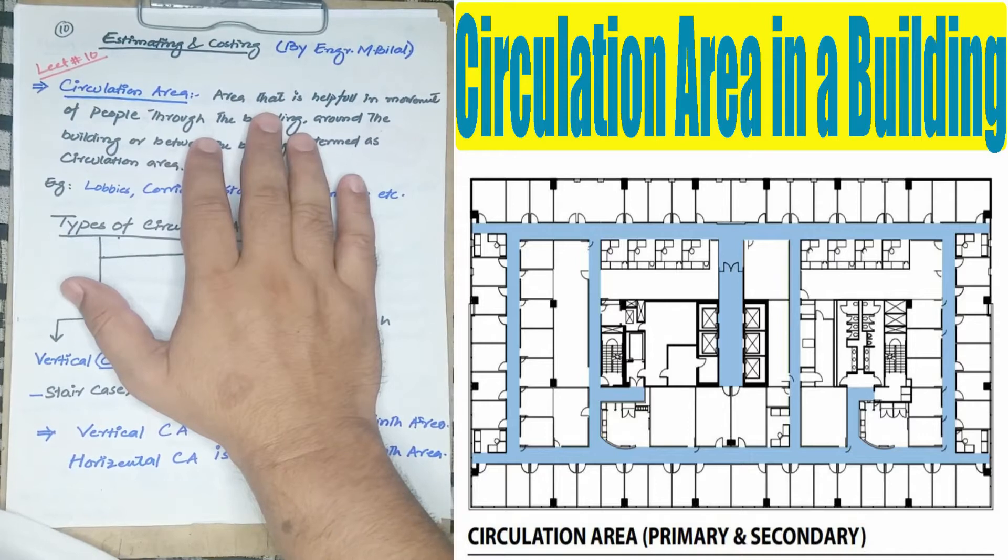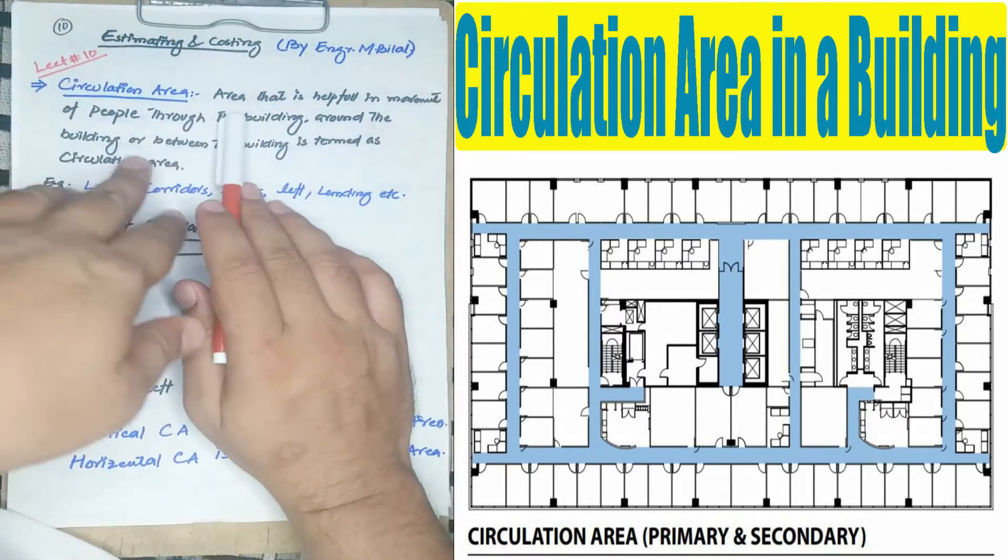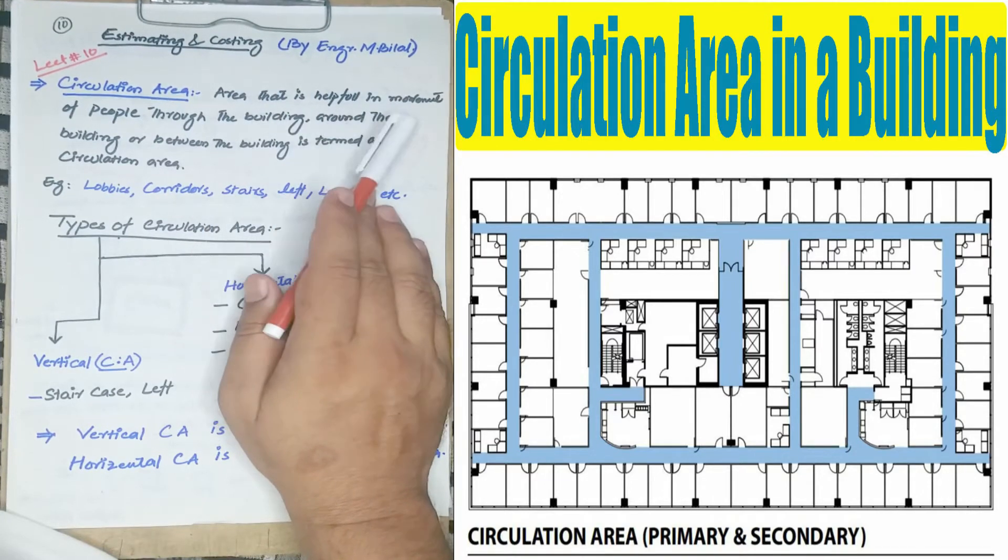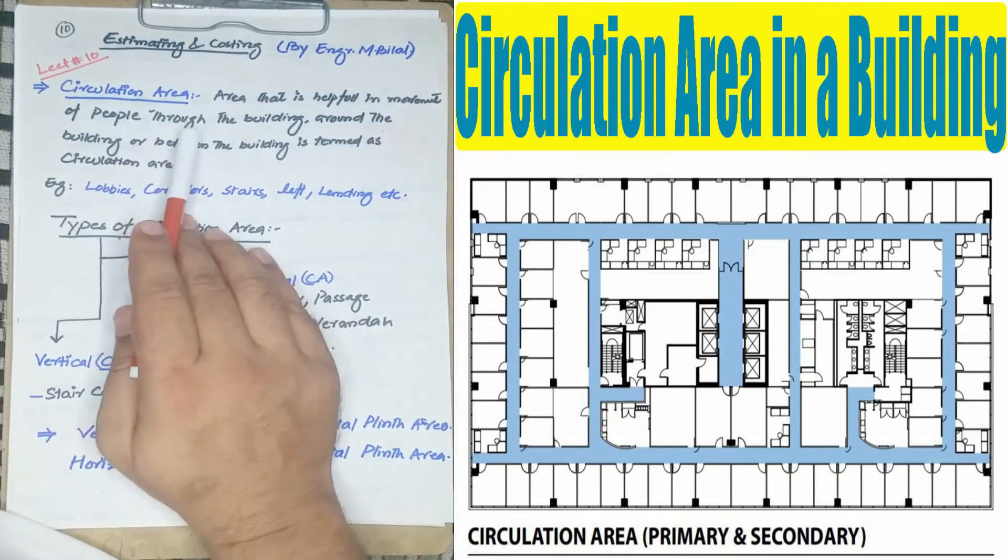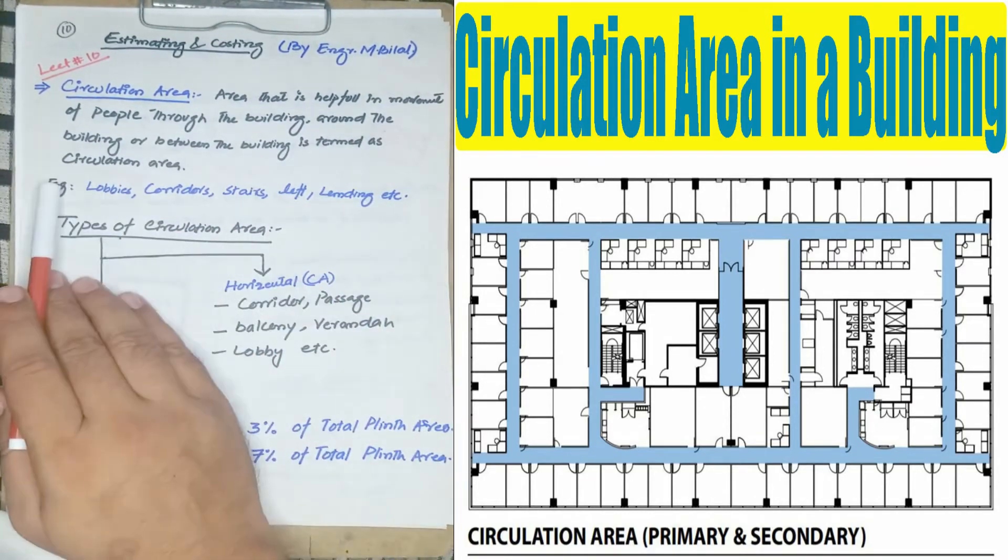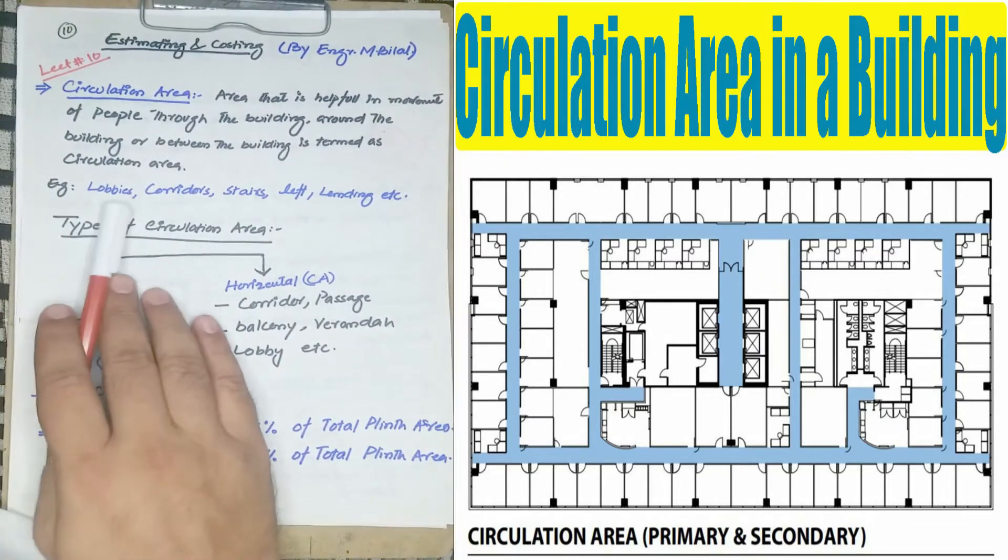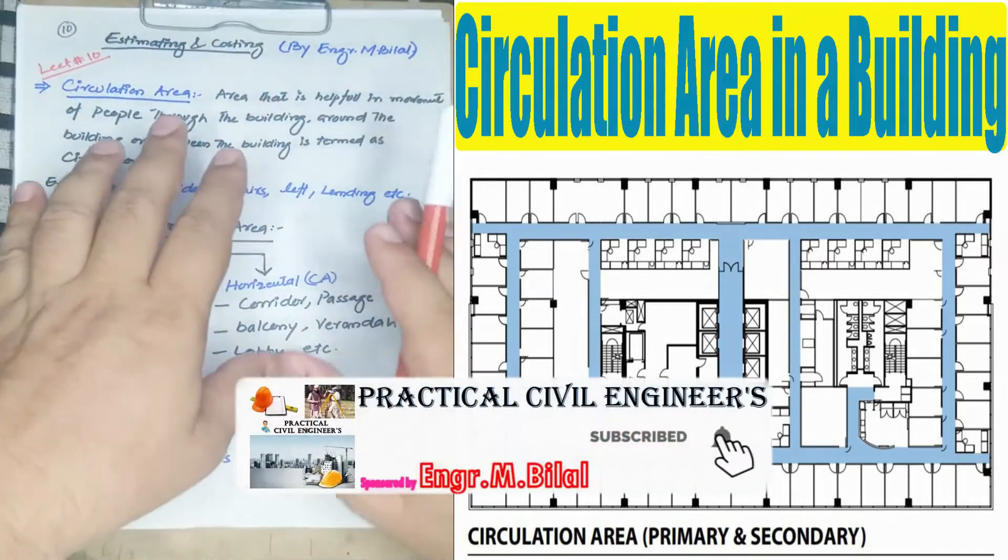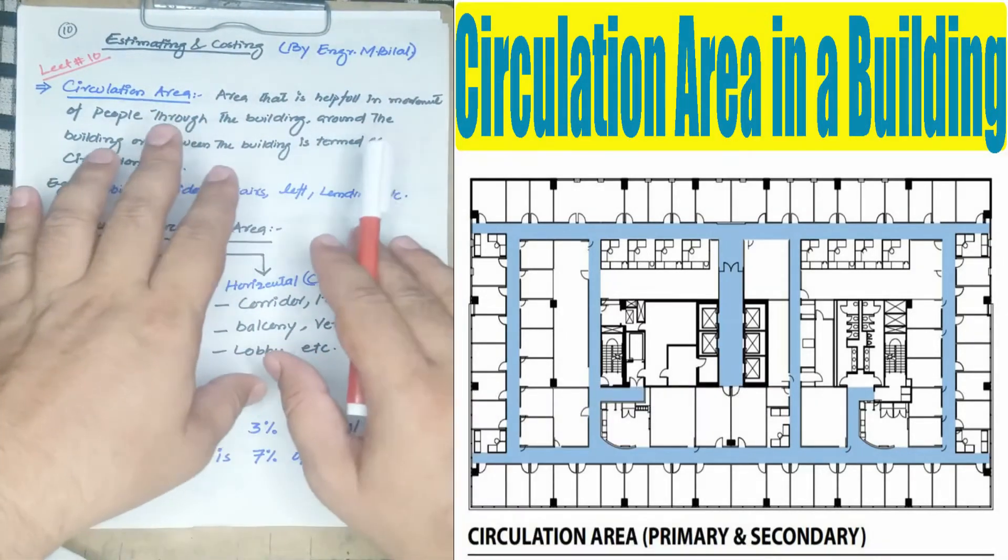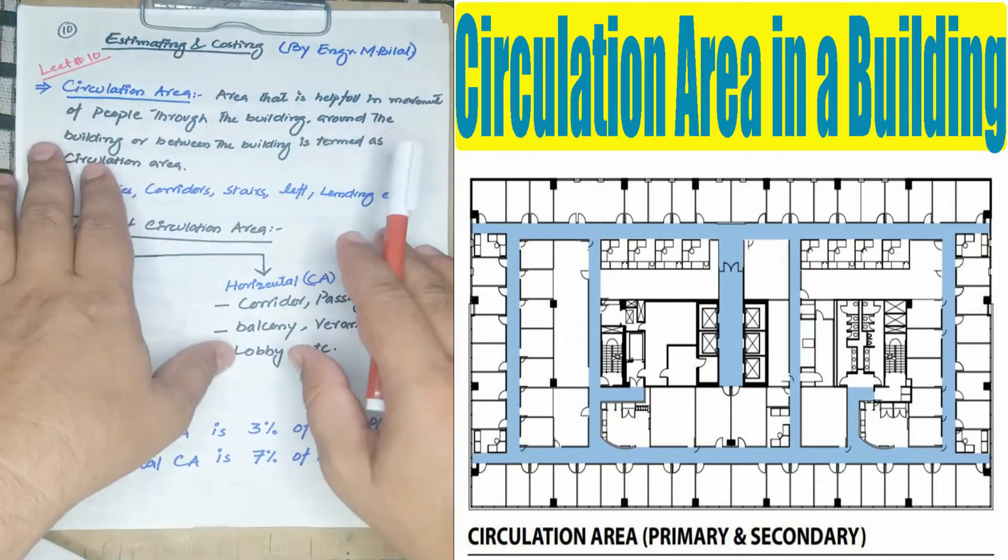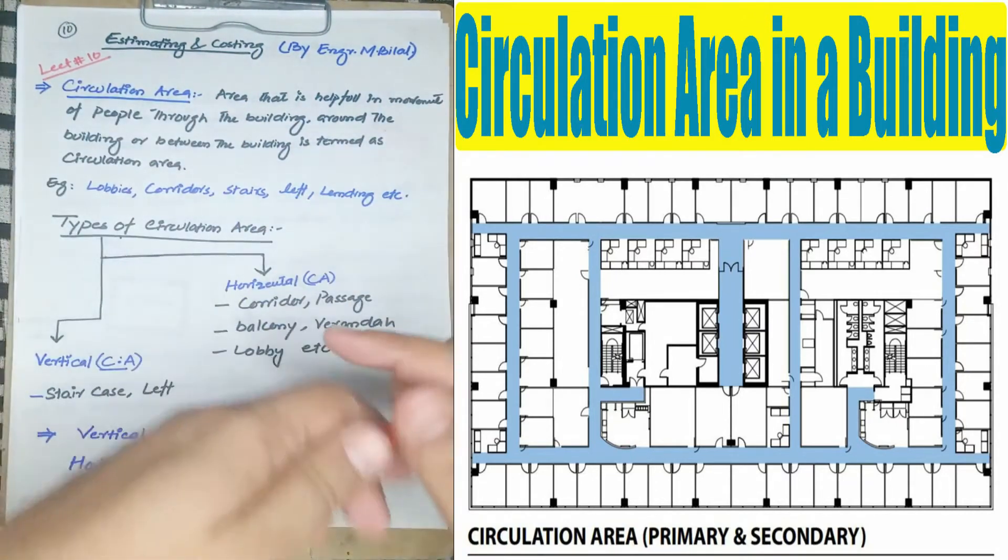Our today's lecture is on circulation area. So what is circulation area? Circulation area is that area which is helpful in movement of people through the building, around the building, or between buildings. For example, lobby, corridor, stair, lift, landing, etc. Circulation area is that area which helps the people for their movements in the building or outside the building.